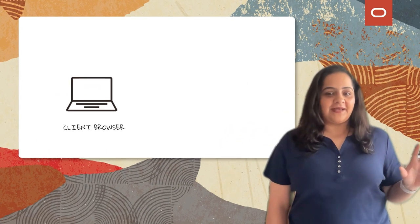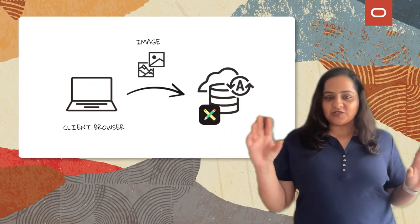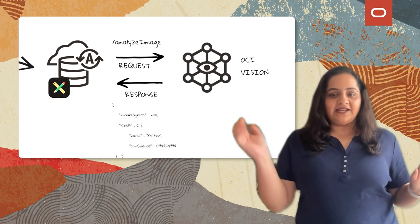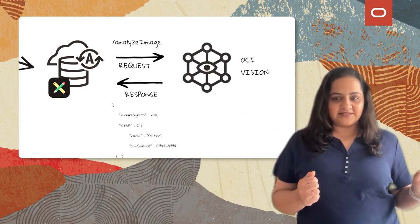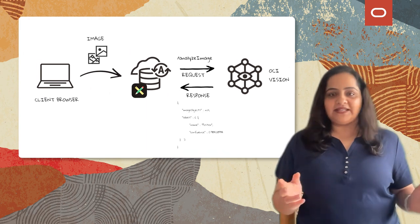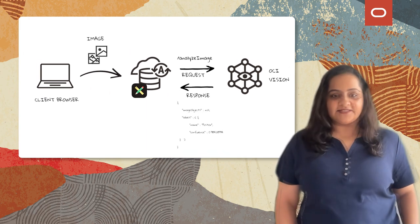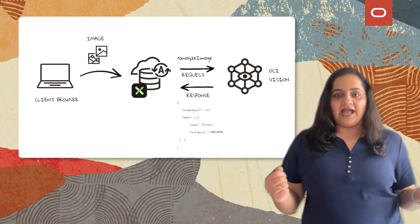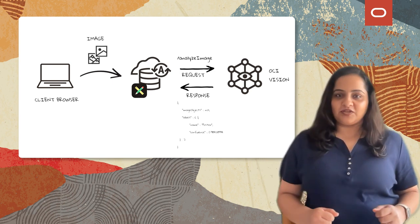Isn't it cool? Let's get an overview of how this was configured. From my Apex app, I make a web service call to the OCI Vision API and invoke the Analyze Image service, one of the pre-trained models to detect objects among many other services. When a user uploads a new image, the model indexes this image automatically and performs the image recognition.